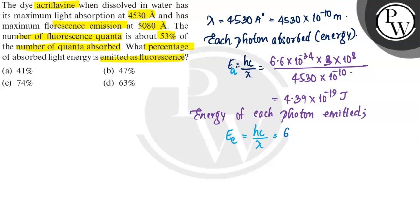So hc value 6.6 into 10 power minus 34, c value 3 into 10 power 8, lambda value here, lambda value that is 5.080 into 10 power minus 10. So this value is 3.92 into 10 power minus 19 joules.